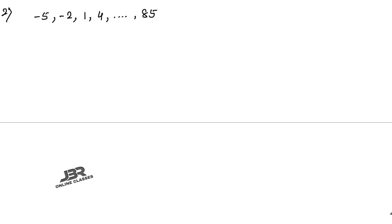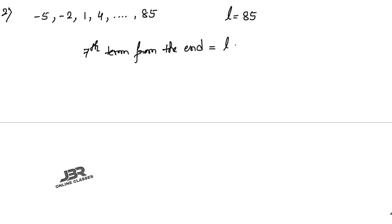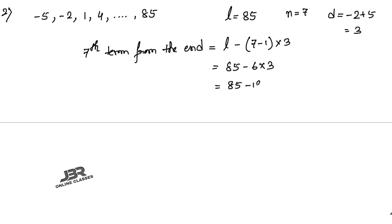Problem 2: Find the 7th term from the end of the sequence: −5, −2, 1, 4, ..., 85. The last term l = 85. When finding the nth term from the end, the formula is: l − (n−1)d. Here d = −2 − (−5) = 3. So the 7th term from the end = 85 − (7−1) × 3 = 85 − 18 = 67.